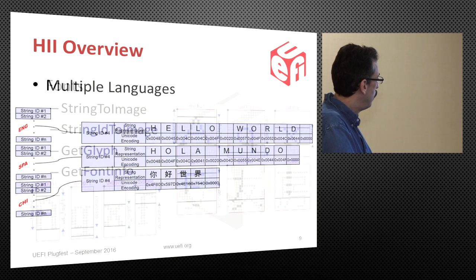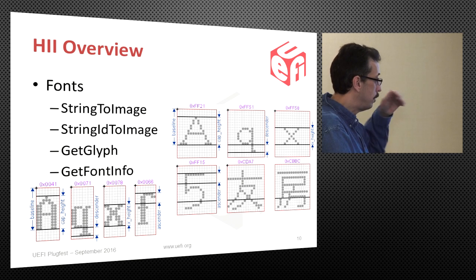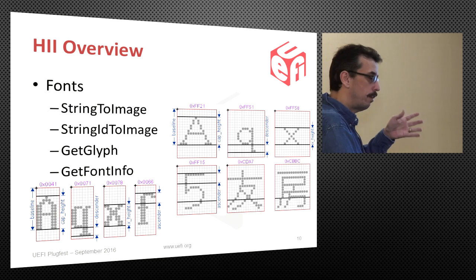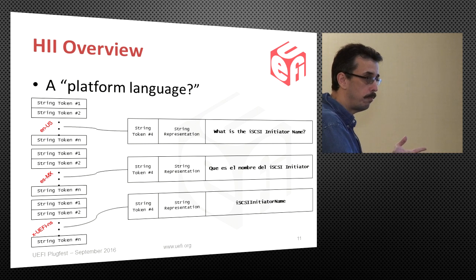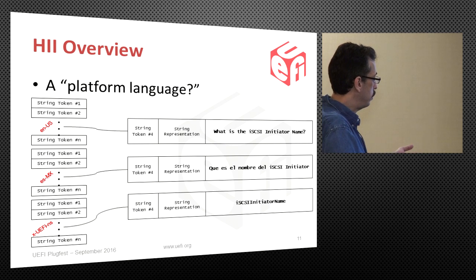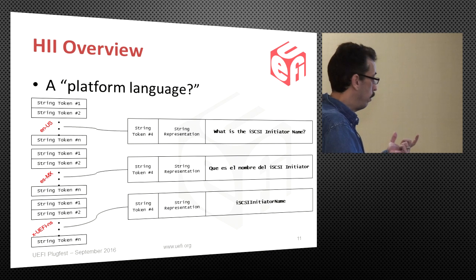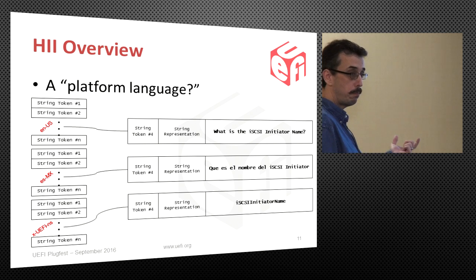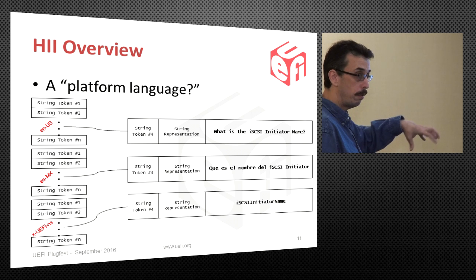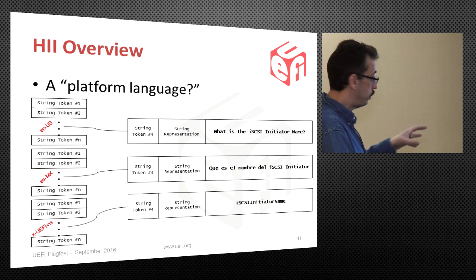We also have font support. With HII, we allow third-party devices - devices not attached to the motherboard - to bring things to the table that maybe the base platform didn't have. For instance, if a device wanted to display things in certain languages, it could go ahead and contribute certain fonts to the base system. In Chinese, there are a lot of glyphs possible, and if certain words weren't represented in the platform's font database, devices could contribute them. Again, it takes from that black box and moves to a more cooperative mode of operation between devices and the platform itself.